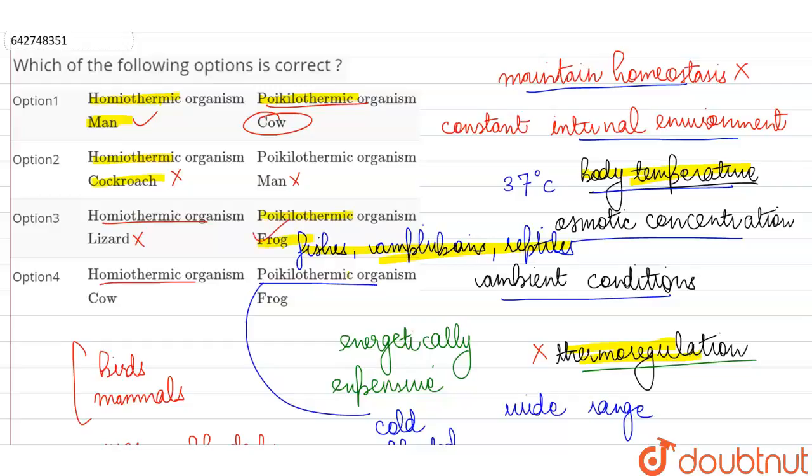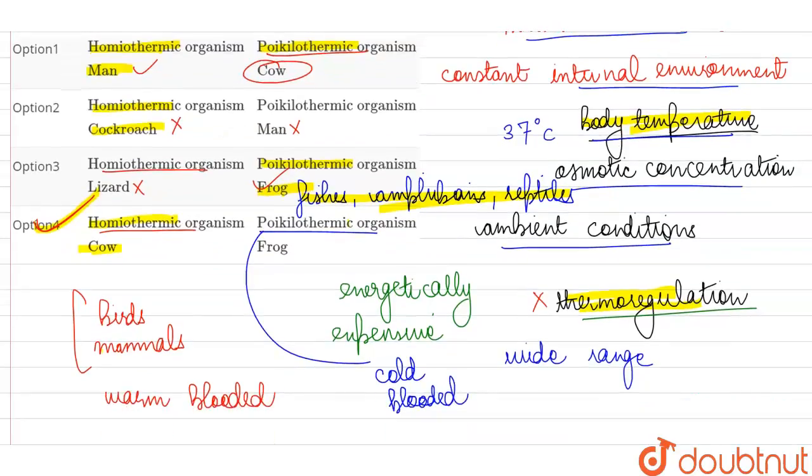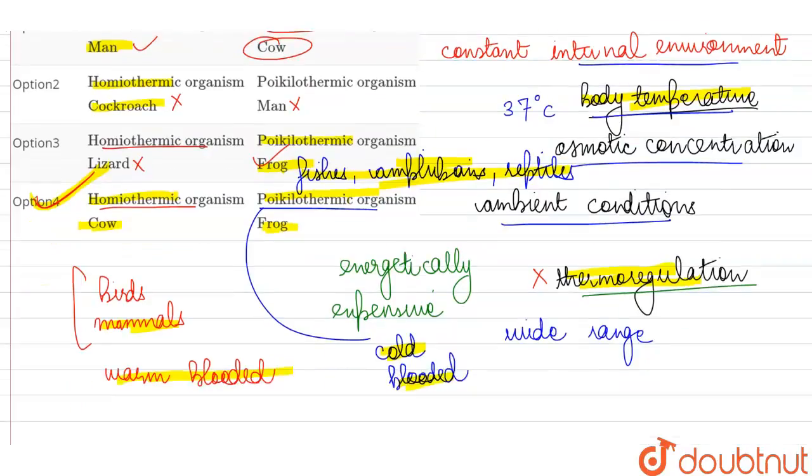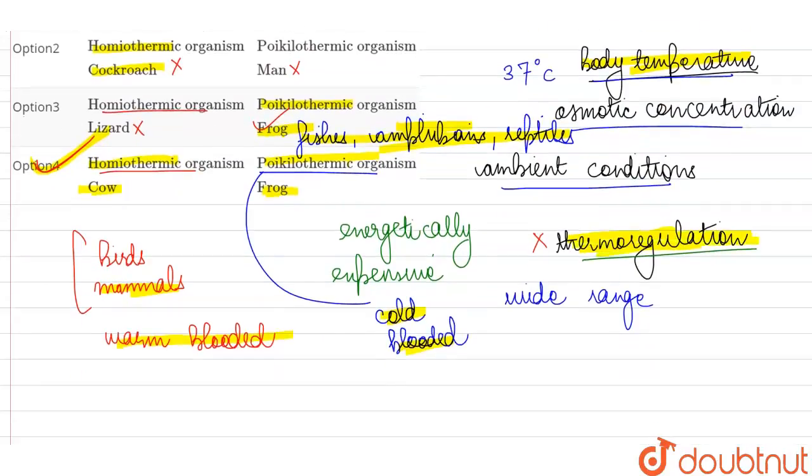But only in option D, we are finding that both of the examples are given correctly. For homeothermic, they are saying cow because it is a mammal, so it is warm-blooded and for poikilothermic, they are saying frog which is an amphibian. So, it is going to be cold-blooded or poikilothermic. So, over here our correct answer is option D, where correct examples of animals have been given on the basis of their ability to maintain homeostasis or to thermoregulate.